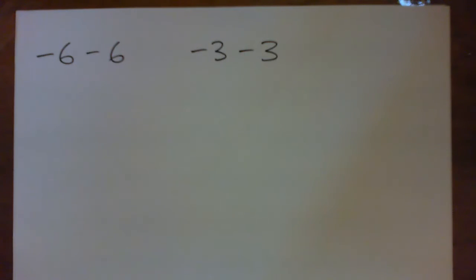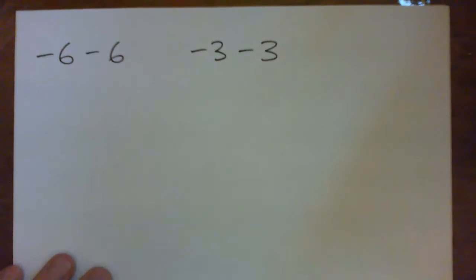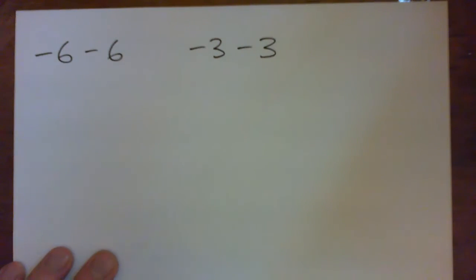So let's see these questions: negative 6 minus 6 and negative 3 minus 3. I can think of three ways to explain it, so I'll explain it all three ways. Negative 6 minus 6, think about your bank account.